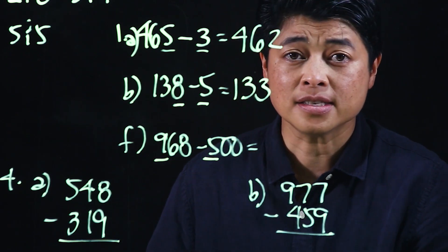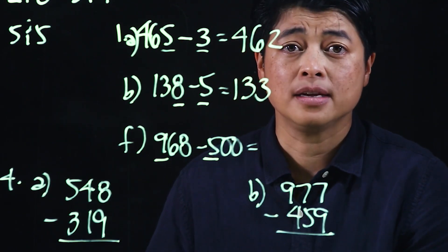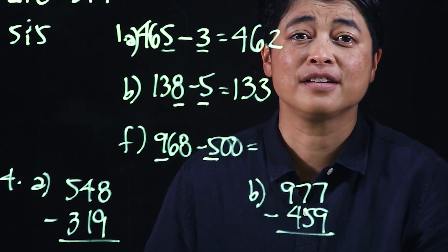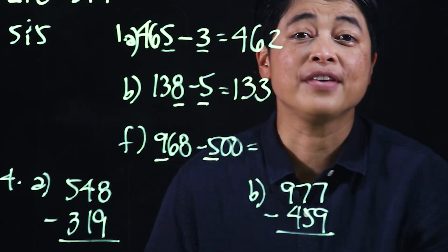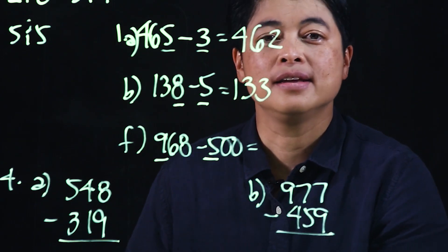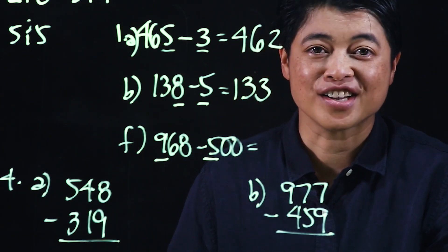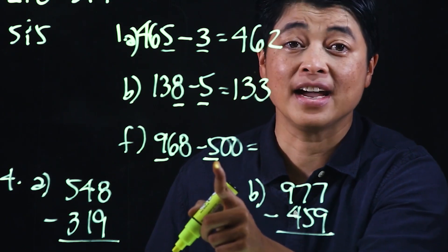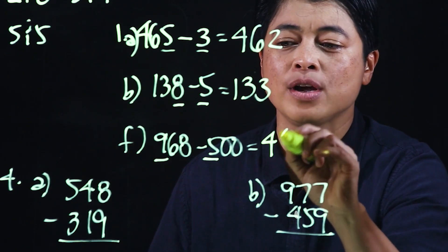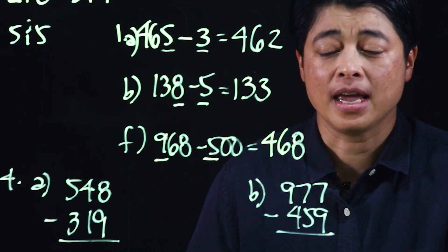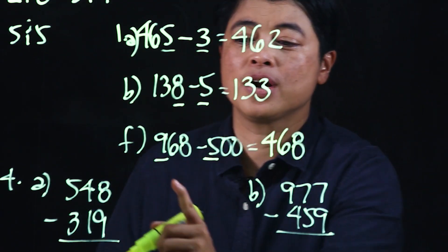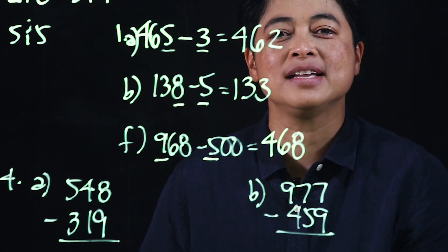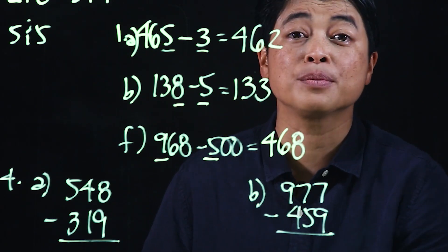Here it's the hundreds that we are subtracting, so everything else will just be copied. The box approach for this is quite confusing, so I simplified it — hopefully you can teach the simplified version to your kids. We take 9 minus 5 is 4 and we copy the rest.